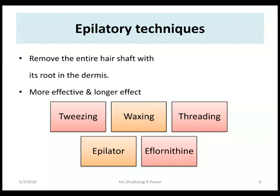The next method is threading. Threading is an ancient technique that involves the use of a long twisted loop of thread which is rotated rapidly across the skin. Hair is trapped within the tight internal coils and pulled off. This technique is very popular in many Arabic countries.